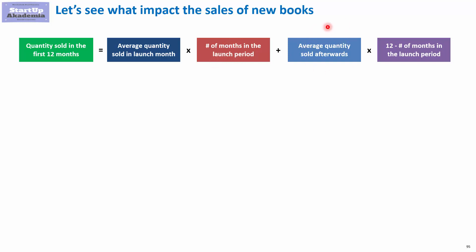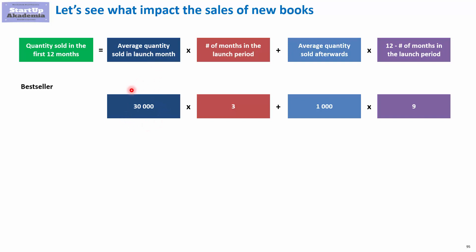We also add the average quantity sold afterwards and the number of months selling outside the launch period. Since we consider only the first 12 months, that number depends on the launch period duration — if the launch period is four months, then we have eight months remaining. For a bestseller, we sell 30,000 per month during a three-month launch period, then 1,000 books per month for the remaining nine months, giving 99,000 total in the first 12 months.